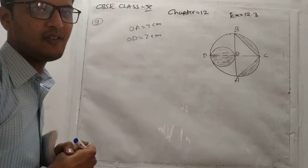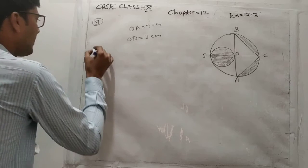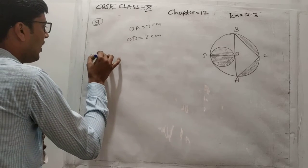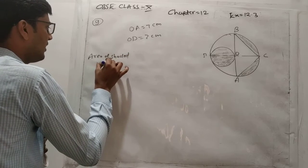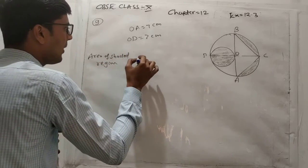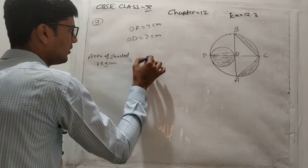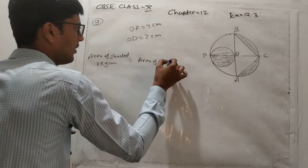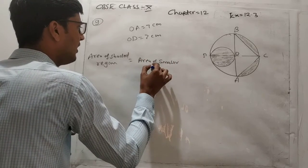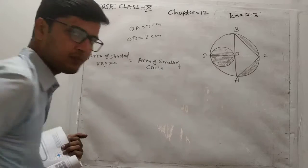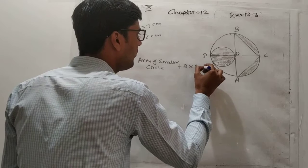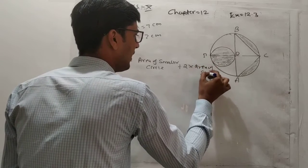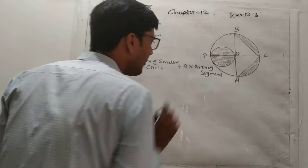So you first calculate area of shaded region. Area of smaller circle plus 2 into area of segment.